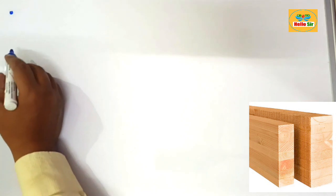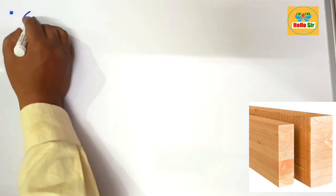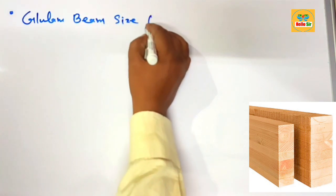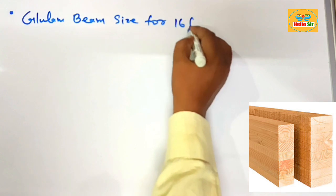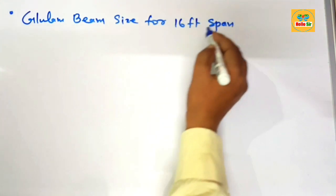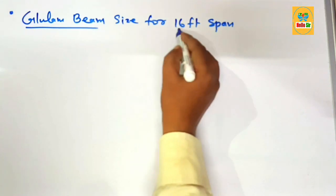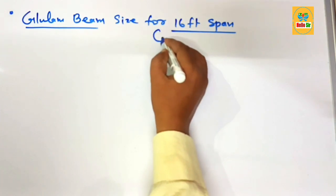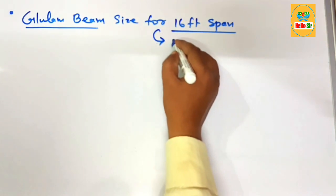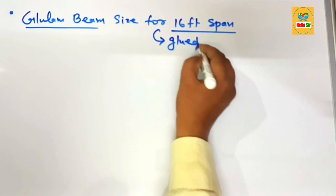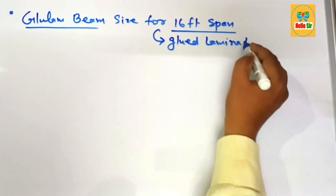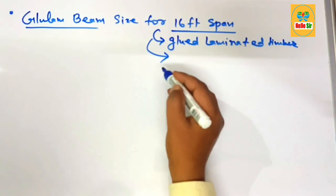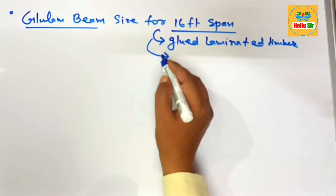In this video we learn about glulam beam size for a 16-foot span — what size glulam beam is required to span 16 foot length. First, understand the full form of glulam beam: it is glue laminated timber, made by a sandwich of multiple layers of thin sheets of wood with adhesive material.